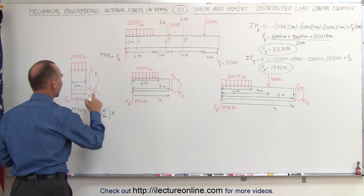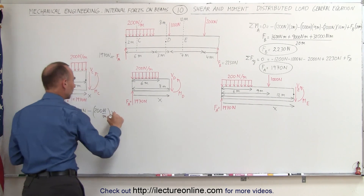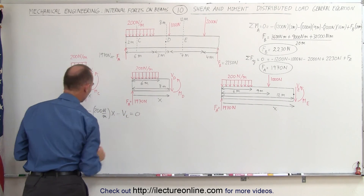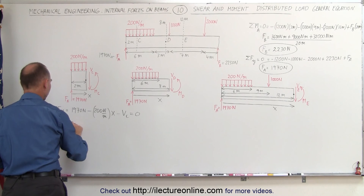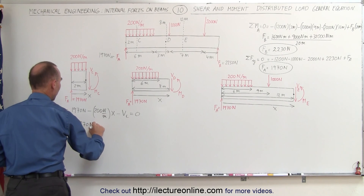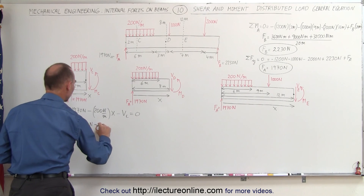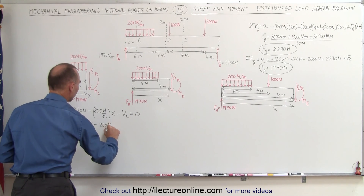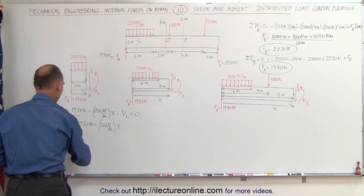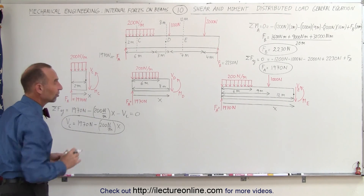We add the shear force, which is a downward force, so minus V sub C. All that adds up to 0, which means the shear force V sub C is equal to 1,970 N minus 200 N per meter times x meters. That is the general equation for the shear force between 0 and 6 meters.